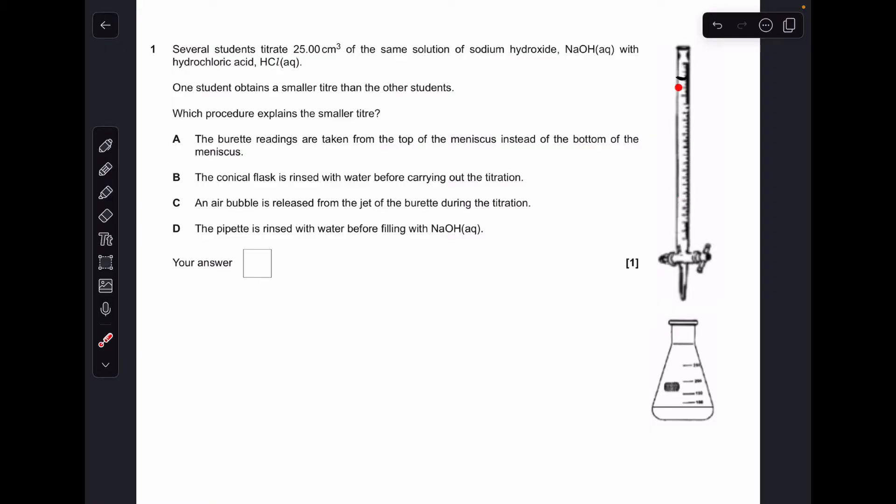Now remember, a titre is all about the difference between the initial reading on the burette and the final reading on the burette. The standard practice is to measure from the bottom of the meniscus, but if you measure from the top, so long as you're consistent and you do both readings from the top, the difference is going to be the same. So that will not alter the titre.